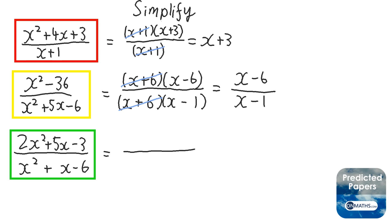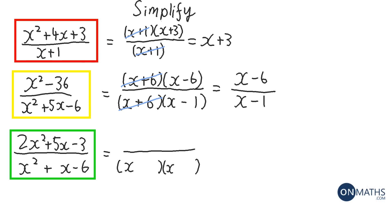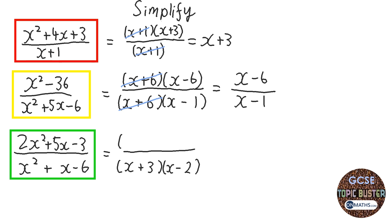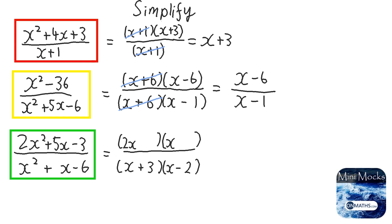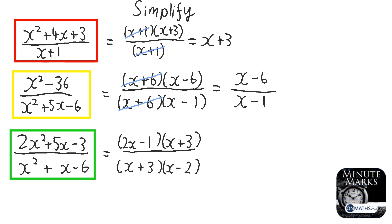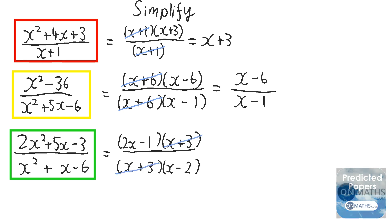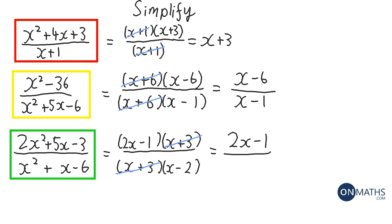Now I'm going to do the bottom one first so I can have an idea of what the bracket will be at the top. Two numbers that multiply to make minus 6 and add to make 1 — that could be 3 and 2, so it's plus 3 and minus 2. For the top, it's 2x and x — the only way of getting 2x squared. They've got to multiply to make minus 3. 6x on the outside and minus x on the inside gets to 5x, and 3 times minus 1 is minus 3. We cross off the same bracket top and bottom, leaving 2x minus 1 over x minus 2.